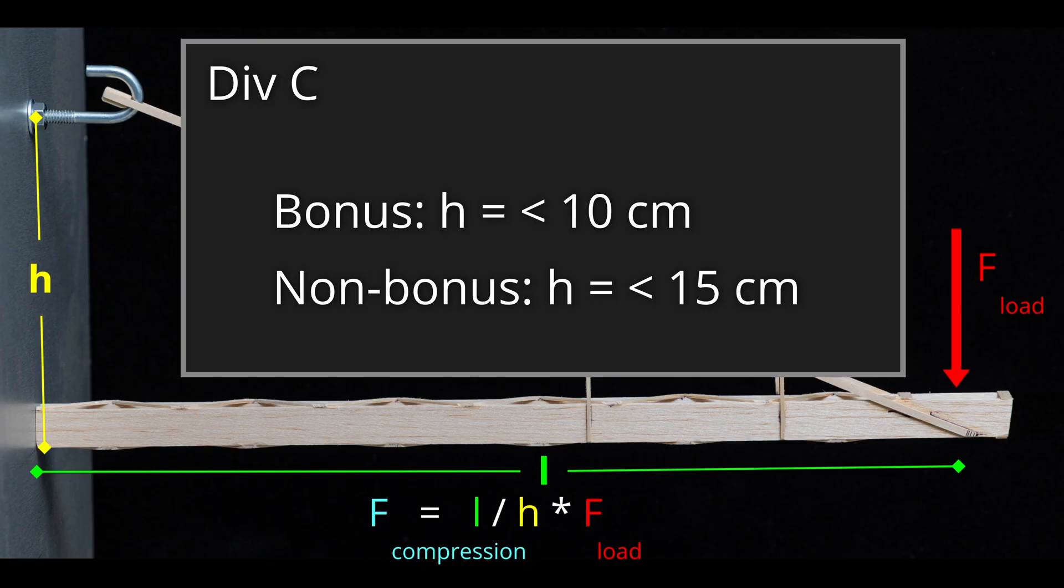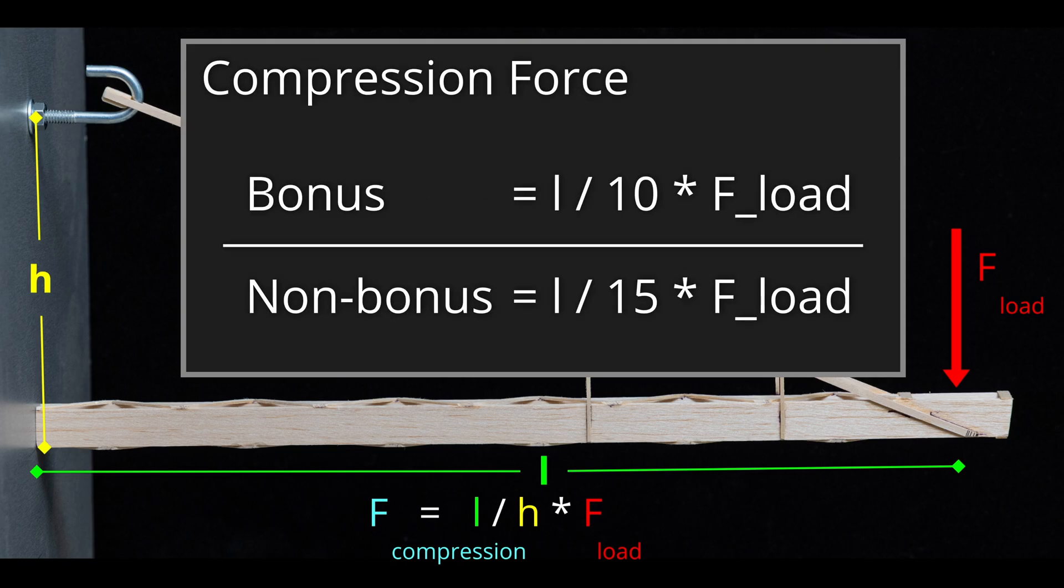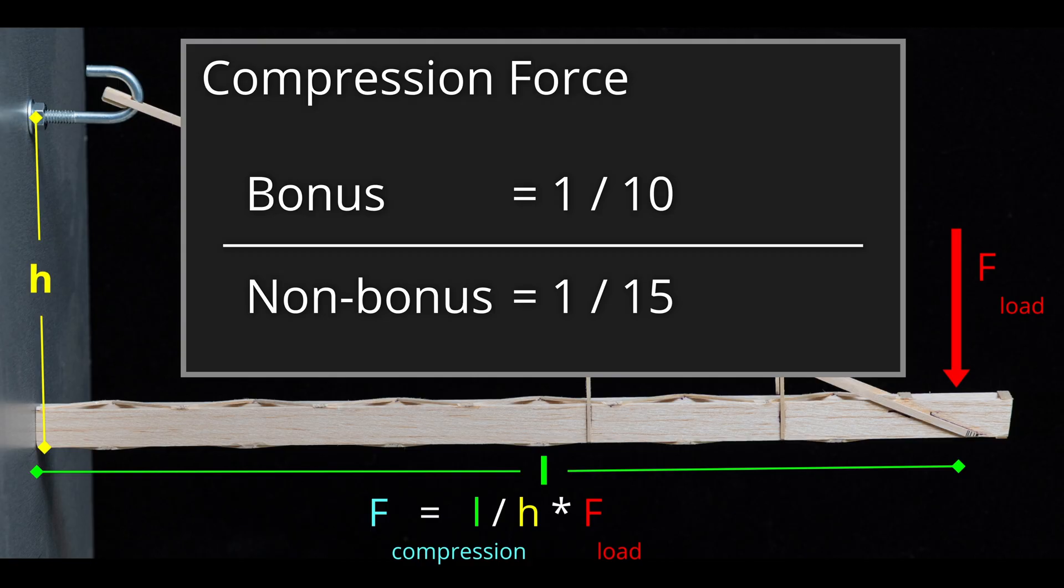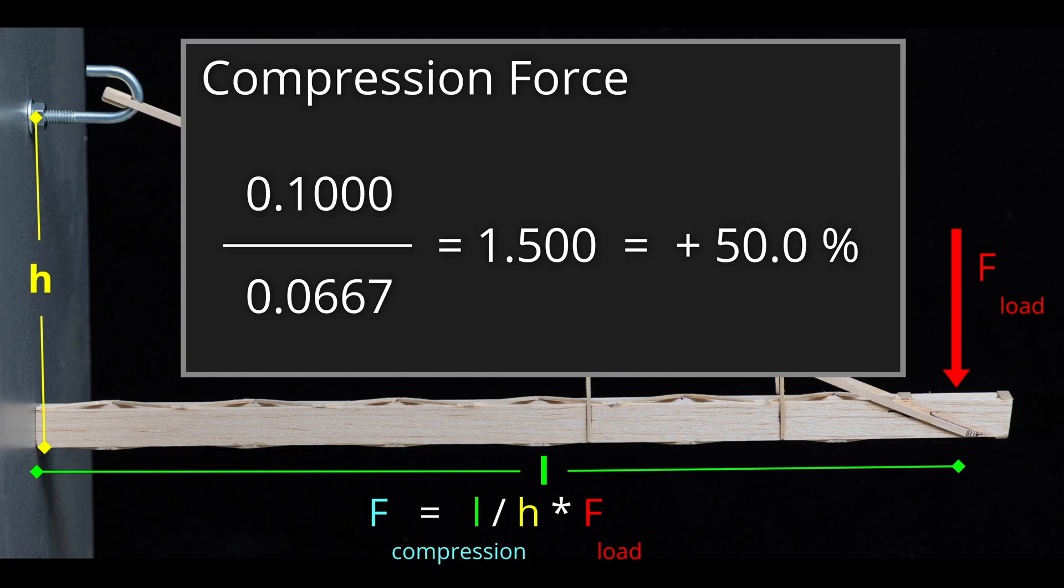The bonus requires the height to be less than 10 cm and the non-bonus must be less than 15 cm. If we divide the bonus compression force by the non-bonus design force, you can see that the length and applied load cancel each other out and the final result is just the ratio of the inverse of the heights. That makes things very easy to figure out and our internal forces for the bonus design are approximately 50% more.